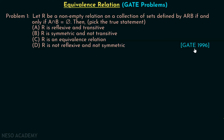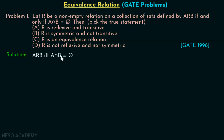Let's move on to the solution. It is given that R is a non-empty relation on a collection of sets, defined by A R B if and only if A intersection B is the empty set. So A intersection B equal to the empty set means there must not be any common element between A and B.